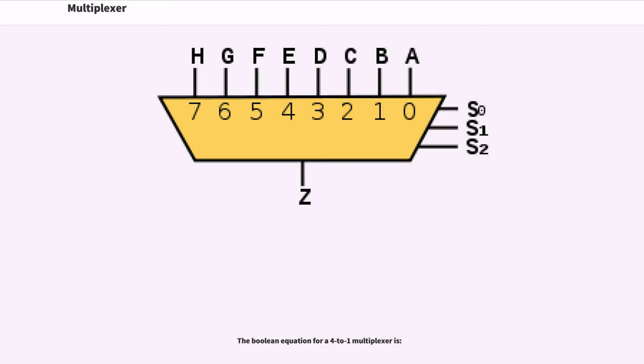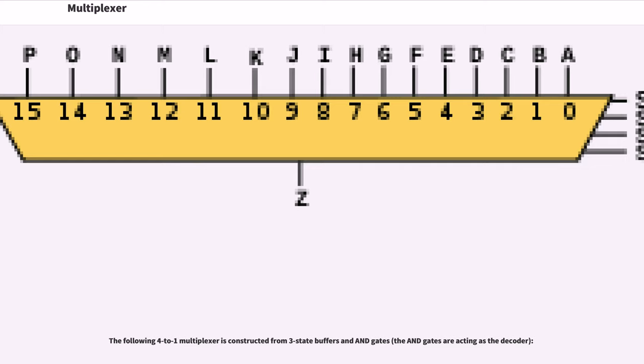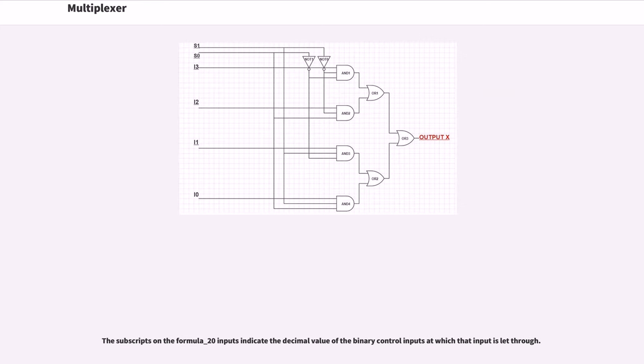The Boolean equation for a 4 to 1 multiplexer is. The following 4 to 1 multiplexer is constructed from 3 state buffers and int gates. The subscripts on the formula underscore 20 inputs indicate the decimal value of the binary control inputs at which that input is let through.